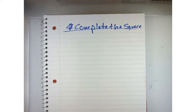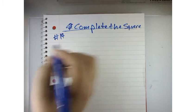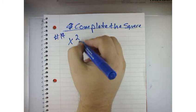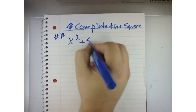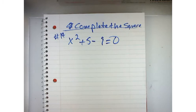Let's just do problem number 14 out of the textbook. We're asked to solve for x squared plus 5x minus 9 equals 0.